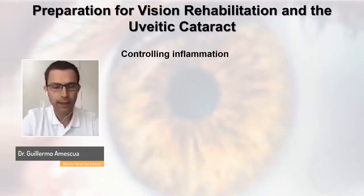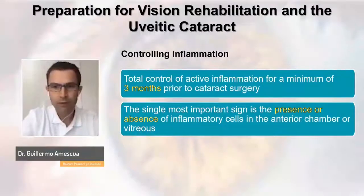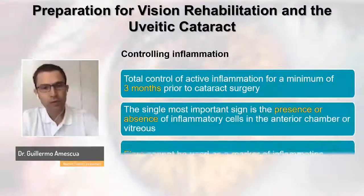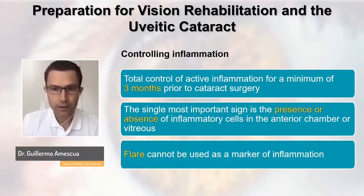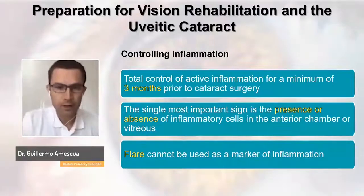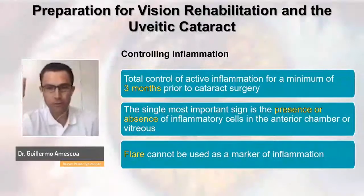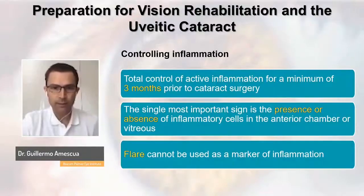Controlling the inflammation is very, very important. The most important sign to know if the eye is inflamed is clinical examination — the presence or absence of inflammatory cells in the anterior chamber or vitreous. Patients with chronic uveitis can have damage to the aqueous-blood barrier and chronic flare. The presence of flare alone is not a contraindication for cataract surgery — it's the presence of active cells that tells us we should not proceed. A flare meter machine is available in some centers, but clinical slit lamp examination suffices.